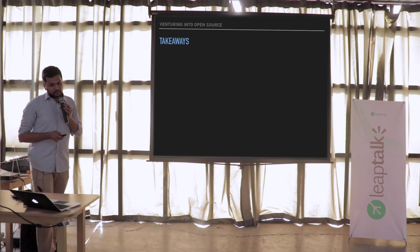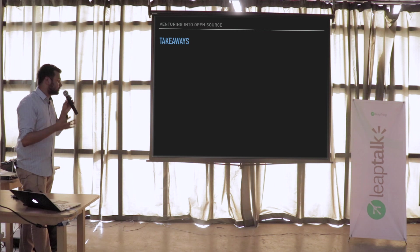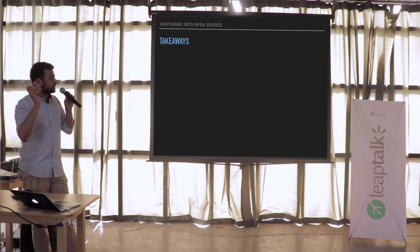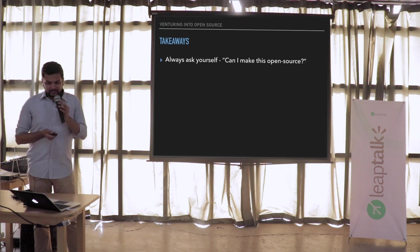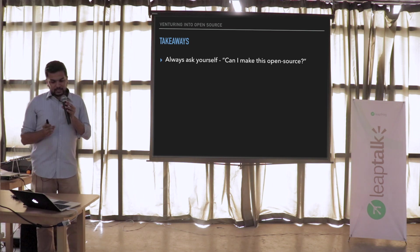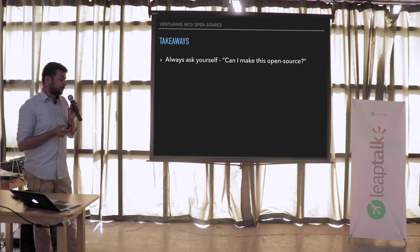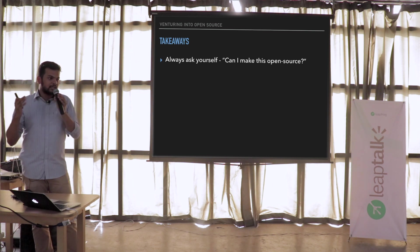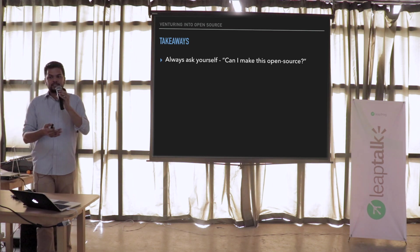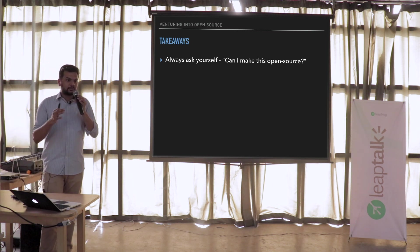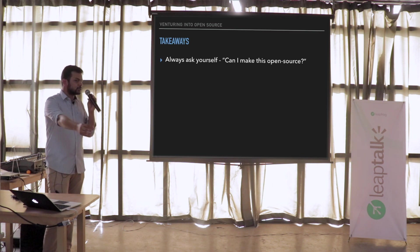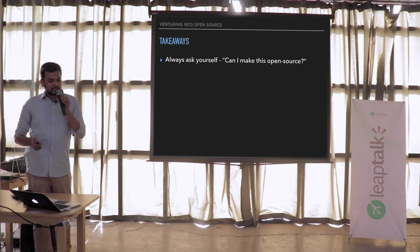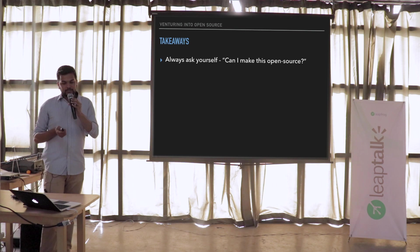If you take nothing else away from this talk, take these things. Always ask yourself: can I make this open source? You can ask this in each pull request you send to your private repositories — can I extrapolate this function to a separate library and make that open source? That's the magic question. Always ask yourself: can I make this open source? Because not everything makes sense to be open sourced.